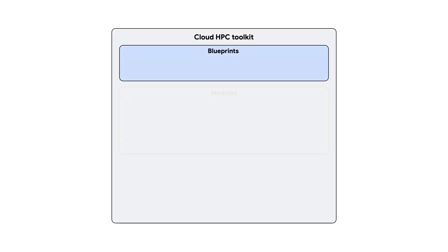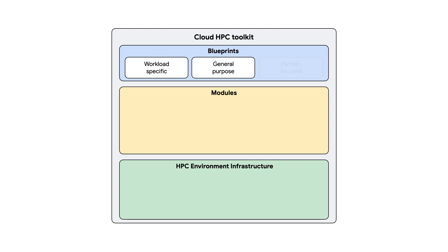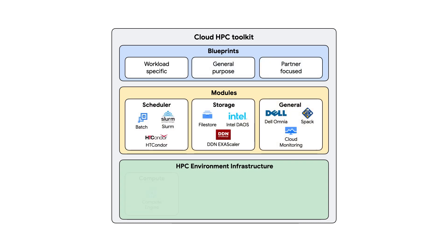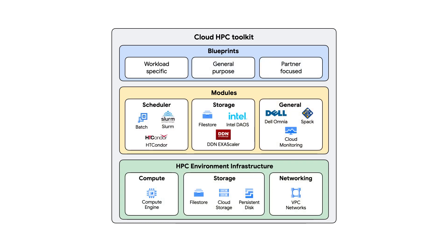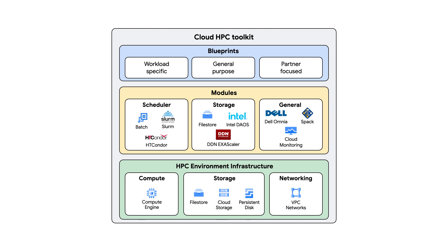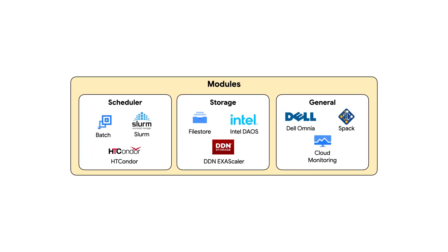The HPC Toolkit consists of a set of blueprints which define the HPC cluster or system, and calls a set of modules which are used to deploy actual cloud infrastructure, such as compute, networking, and storage resources. One way to think of it is that the blueprint calls the modules to create the infrastructure that you need. In the modules, we support schedulers such as Slurm, HT Condor, and Google Cloud Batch, with more partner offerings to come.